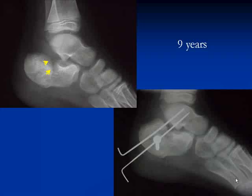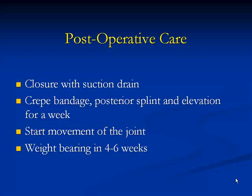A second case: a nine-year-old boy who fell from a height with significant displacement of the articular surface. Open reduction and internal fixation was performed, using two K-wires and one lag screw. Post-operative care includes closure with suction drain, crepe bandage, posterior splint, and elevation for one week, followed by early joint mobilization and weight bearing at four to six weeks.